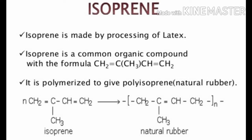Isoprene is the monomer used for the preparation of natural rubber. Isoprene is made by processing of latex, which is the milky liquid obtained from plants. Isoprene is a common organic compound with the formula CH2=C(CH3)-CH=CH2. It is polymerized to give polyisoprene.